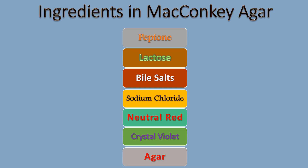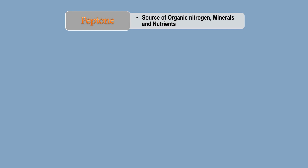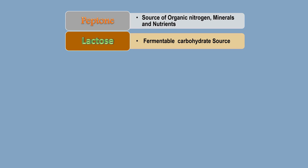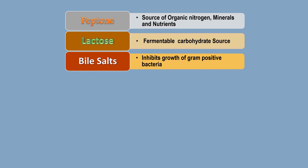Let's see the role of these individual ingredients. The first ingredient is peptone, which is the source of organic nitrogen, minerals, and nutrients. The second ingredient is lactose, a fermentable carbohydrate source. The third ingredient is bile salt, whose role is to inhibit the growth of gram-positive bacteria. The fourth ingredient is sodium chloride, whose role is to maintain osmotic balance.